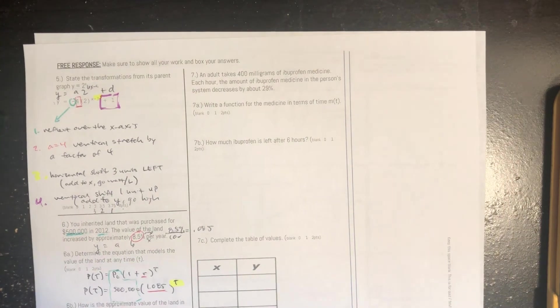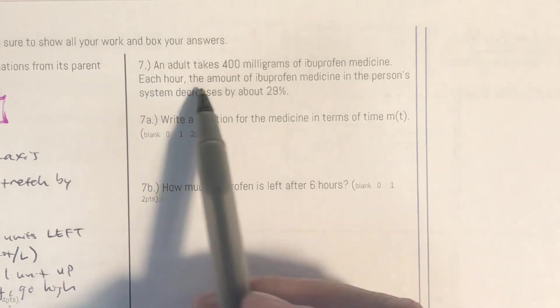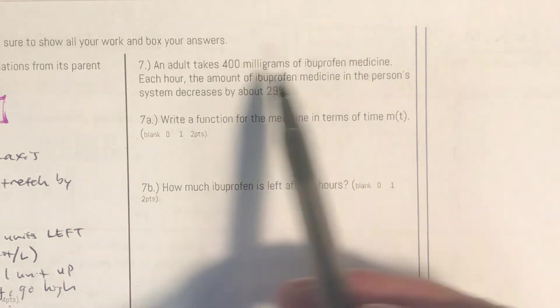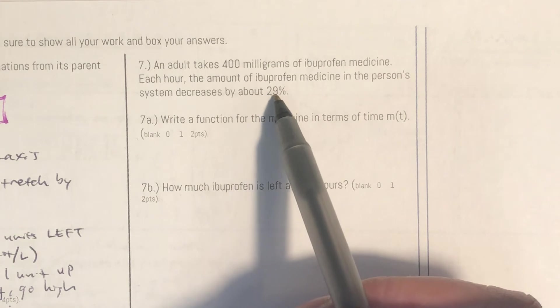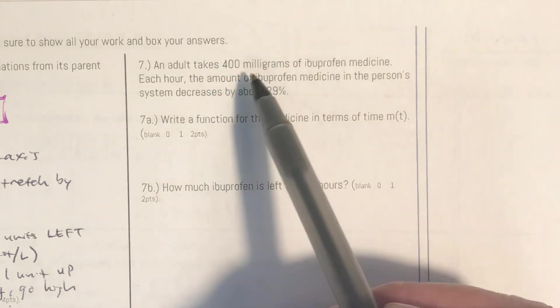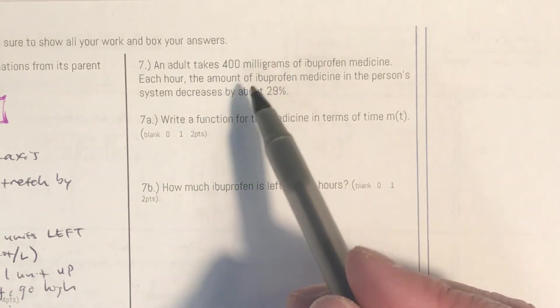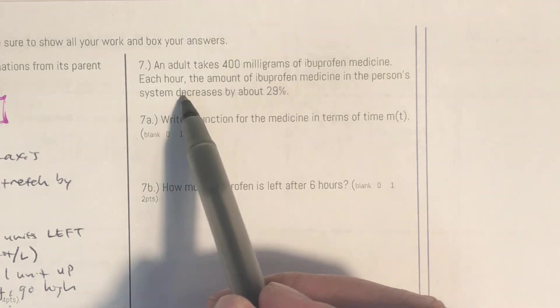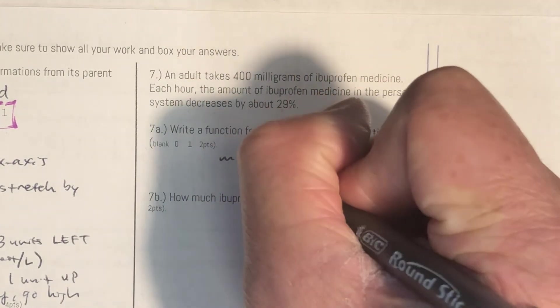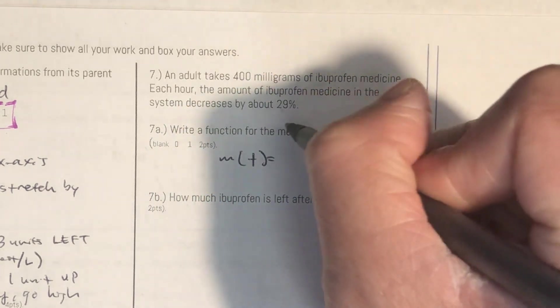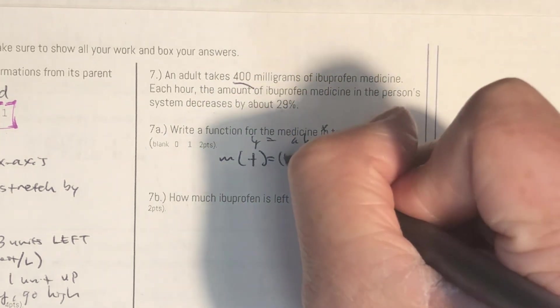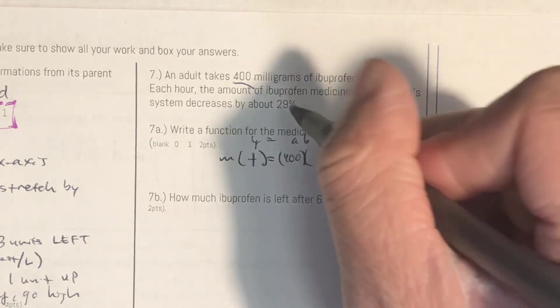Question number seven: An adult takes 400 milligrams of ibuprofen medicine. Each hour, the amount of ibuprofen medicine in the person's system decreases by 29%. So again, just think about it. This is like a pill. They're measured in milligrams. And think about what happens when you take medicine, it gets, it disintegrates, it falls apart. So it tells you it decreases by 29%. Write a function of the medicine in terms of time. So M(T) equals, now if you need to, you can write a formula that can help you. The starting point is 400 milligrams. And my rate is not 29 or 0.29.